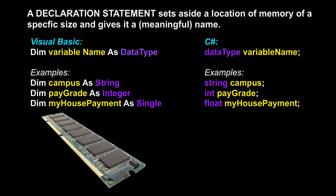The declaration statement sets aside a location of memory of a specific size and gives it a meaningful name. In Visual Basic, it's the keyword DIM, followed by the variable name, as some data type. In C#, it's simply the data type and then the name of the variable, followed by a semicolon. For example: DIM campus as string; DIM paygrade as integer — integer is a whole number like 1, 12, 200; and DIM myHousePayment as single, which is a number with a decimal point. On the C# side, it's basically the same except integer becomes int and single becomes float.